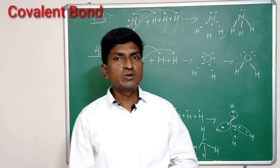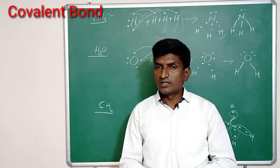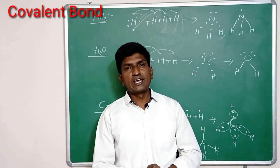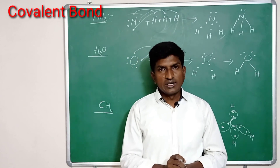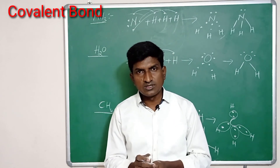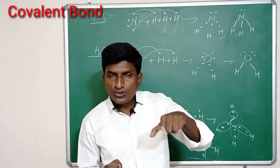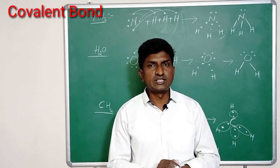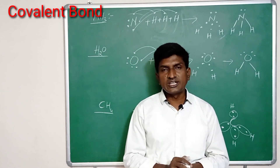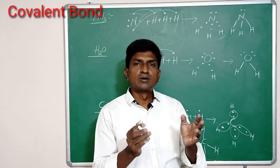Covalent bond is formed due to mutual sharing of electrons between two atoms. Covalent compounds generally have bond energies and bond lengths. Bond length is the distance between the two nuclei of the atoms when a covalent bond is formed — the nuclei are set at a particular distance. Bond energy is the energy required to dissociate or break the covalent bond. This is about covalent bond.